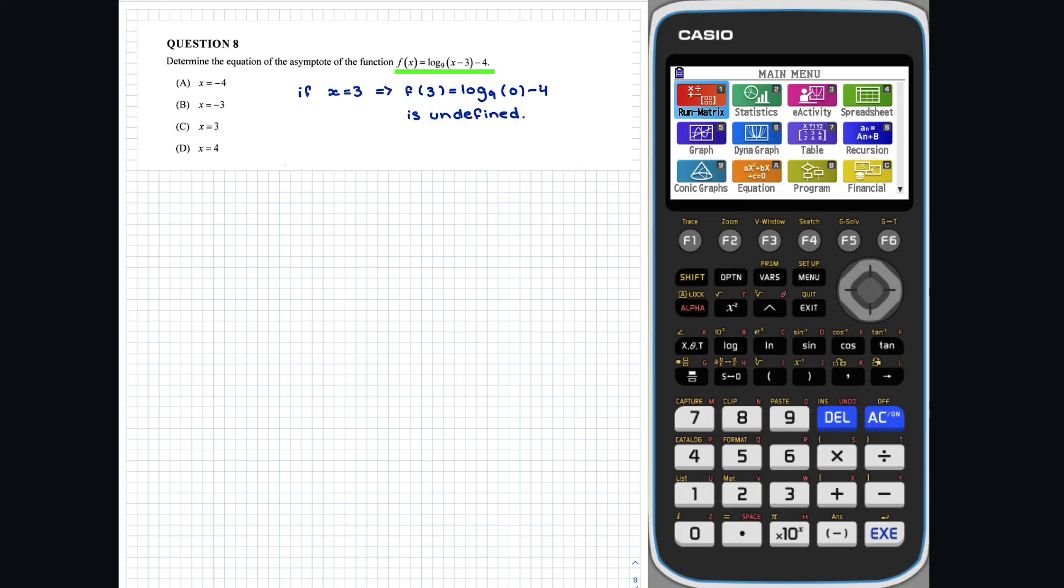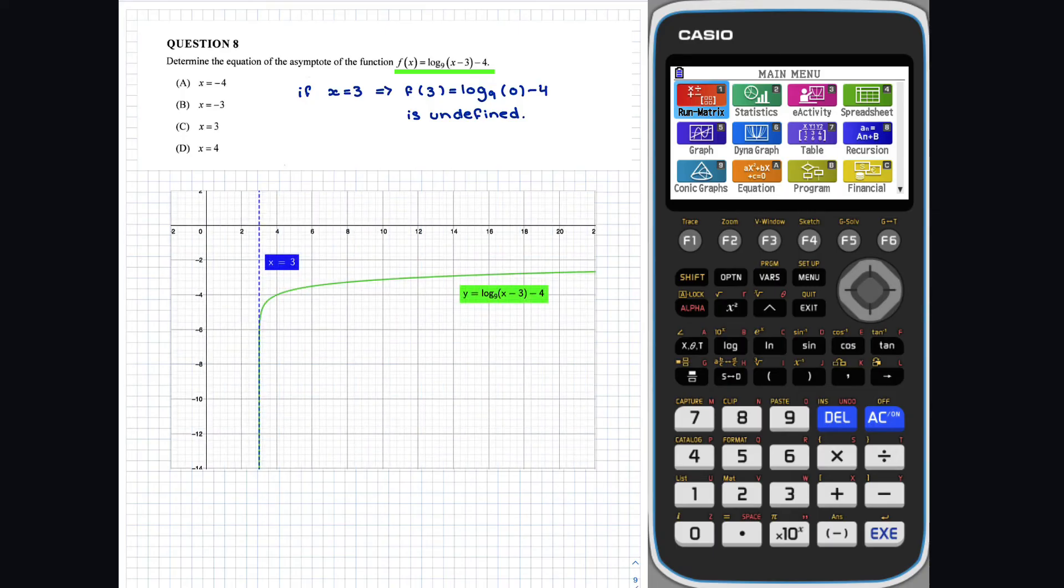So, the equation x equals 3, option c, is the vertical asymptote of f of x.